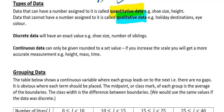Next thing we've got is discrete data. Discrete data will have exact values — shoe size again using that same example, number of people. You're going to have one, two, three, four, five people; you're not going to have six and a half people or anything like that.